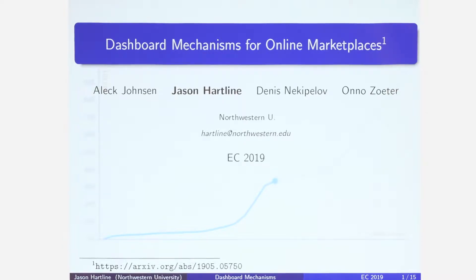There are two issues with this. If you look out in the real world, 99.99% of mechanisms are not truthful. And the theory you get from studying truthful mechanisms doesn't actually translate back and give you good answers for designing non-truthful mechanisms. We actually don't have a really good framework for designing non-truthful practical mechanisms from scratch.